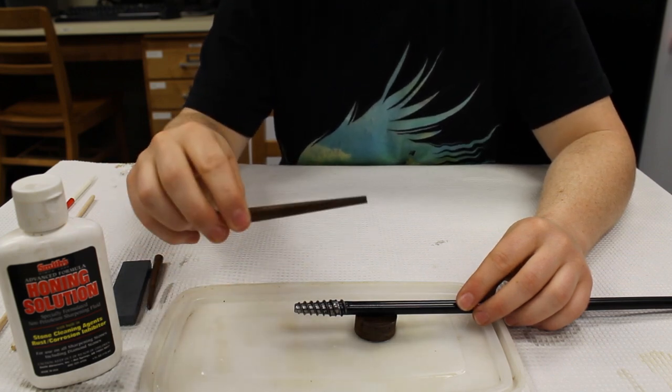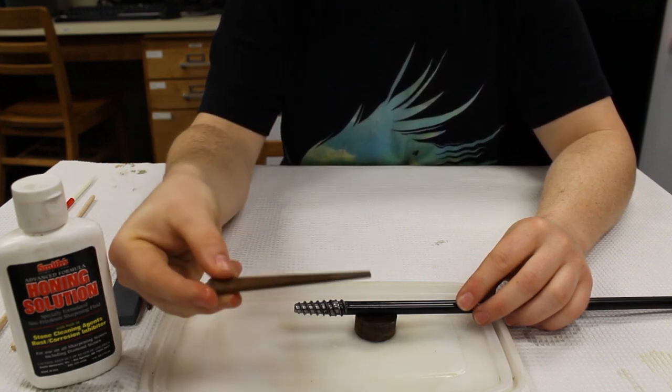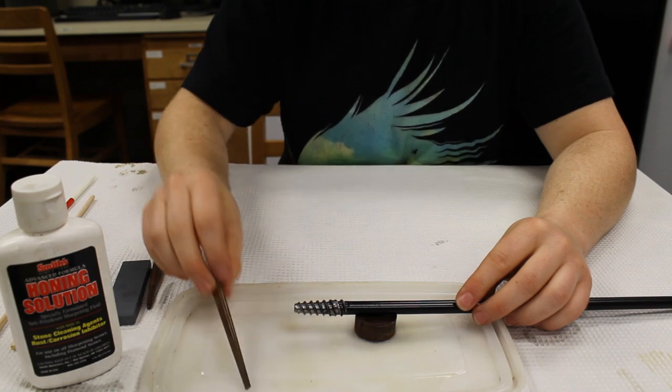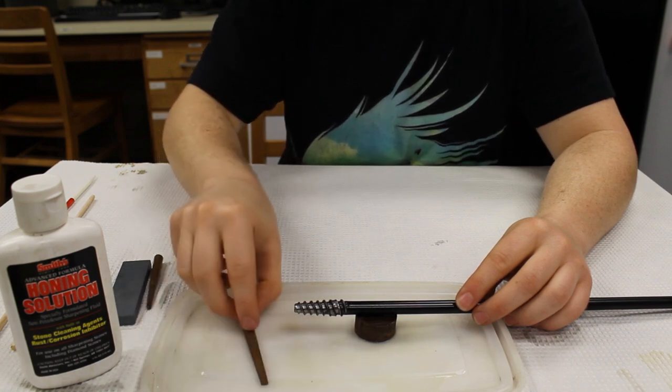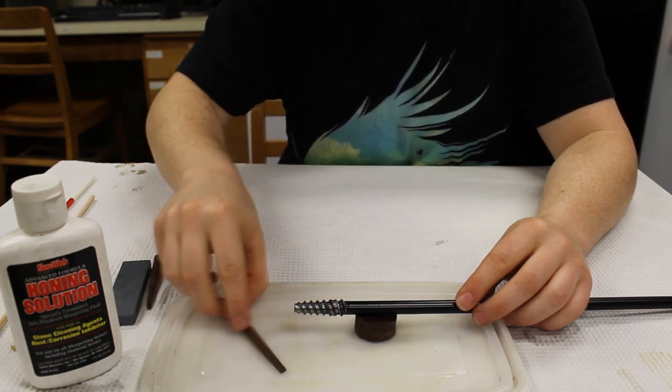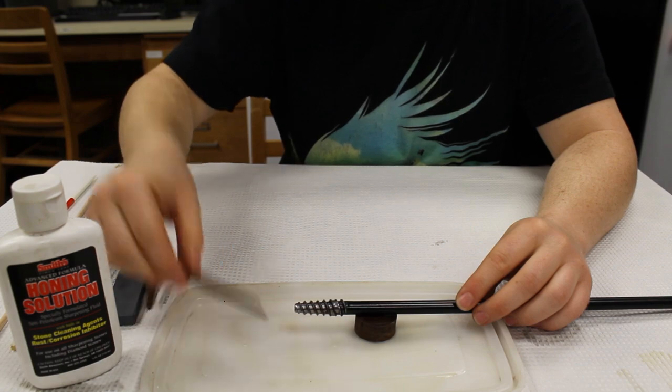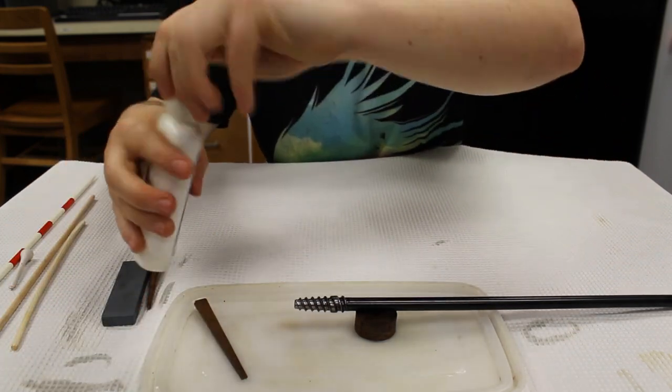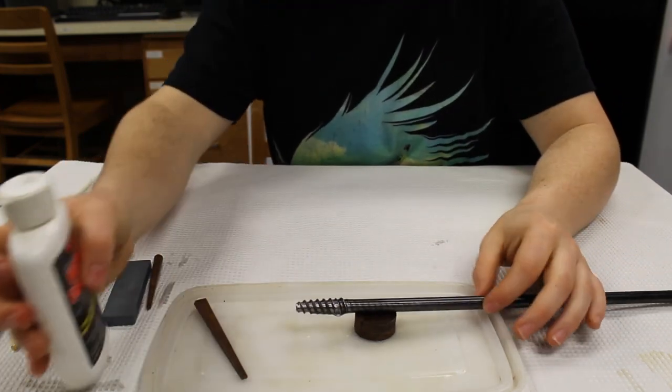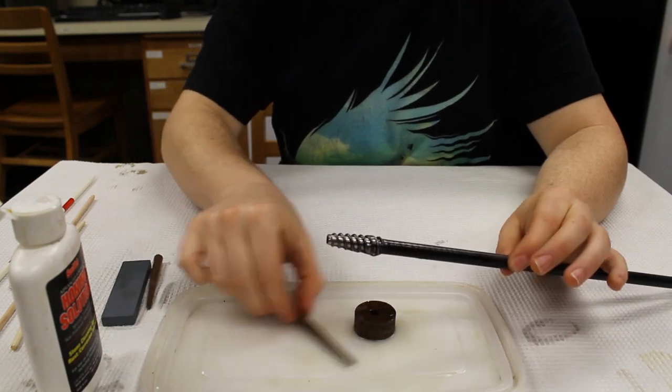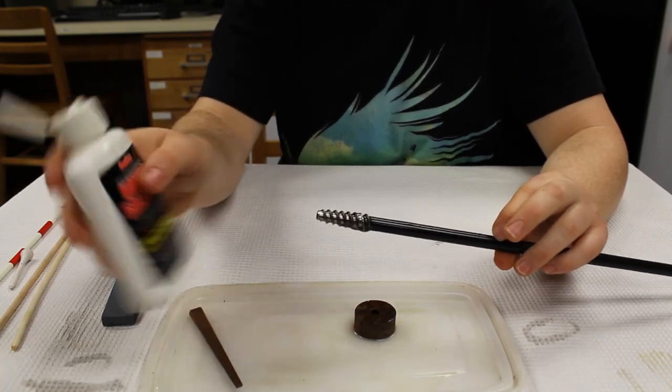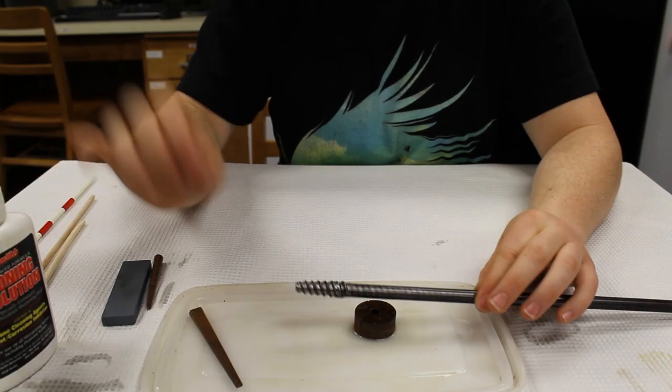So I like to start with the slightly tapered stone. And you also want to make sure that all the stones you're using have been dipped in the honing solution. So this one I had a little bit from earlier. And you never want to have a dry stone on the auger. And it's good to get the auger lubricated as well with the honing solution.